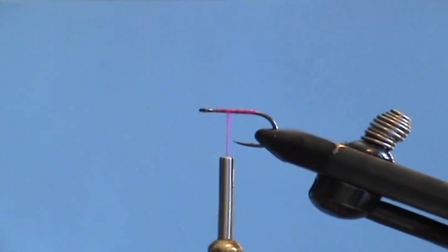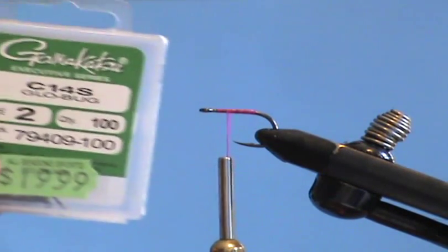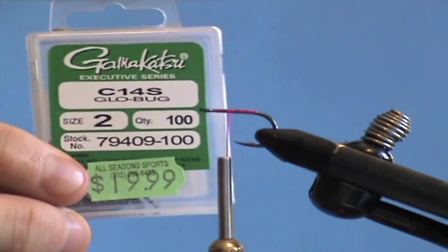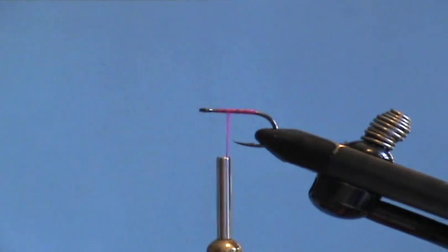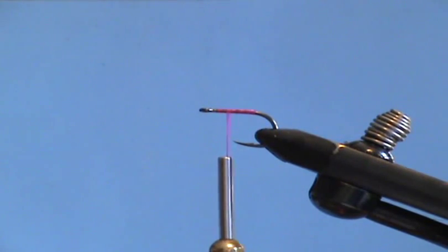Hello everybody, today I'm going to show a second version of a cinder worm, a splinted cinder worm using chamois. I'm going to use a Gamakatsu C14S size 2 blow bulb hook that I have in my vise right now.